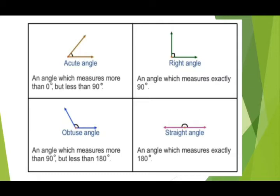An obtuse angle measures more than 90 degrees but less than 180 degrees. 90 degree से ज्यादा but 180 degree से कम, उस angle को हम obtuse angle बोलते हैं। A straight angle measures exactly 180 degrees. 180 degree पे जो angle होता है उसको हम straight angle बोलते हैं।